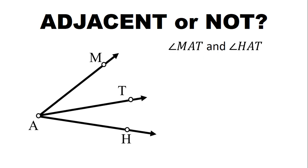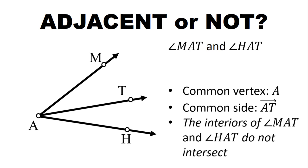How about this? Angle MAT and angle HAT. Adjacent Angles or not? So ano yung common vertex nila? That is A. Common side, that is RayAT. How about the interiors? Yung interiors nila hindi nag-intersect. So they are Adjacent Angles.